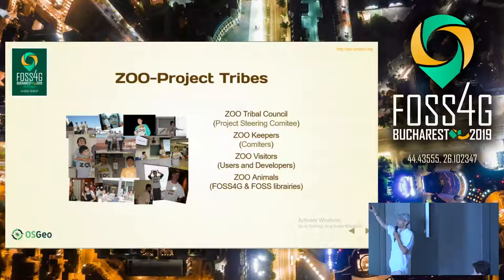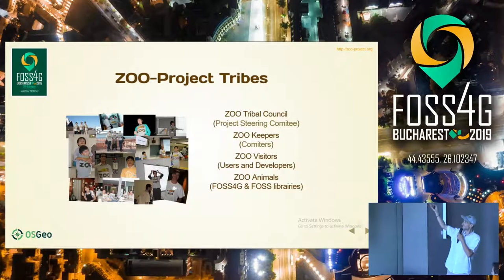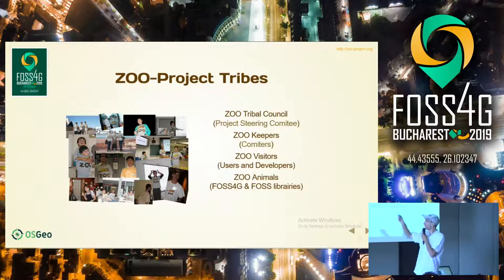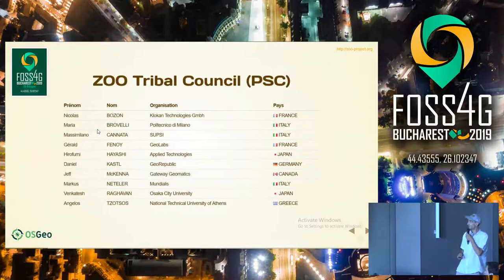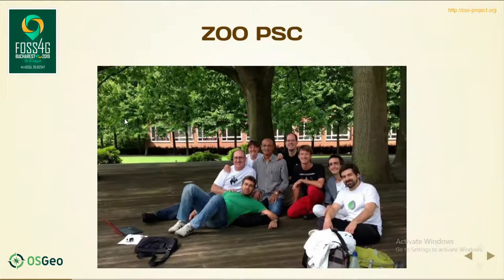You can notice that we love to give new names for everything. We call the project steering committee the tribal council and so on. On the left you can see a few people wearing a ZOO t-shirt, like my amazing children and Franco Amsterdam on the right. The tribal council includes Nicola Bonzo, Maria Brovelli whom everybody knows, Massimiliano Kanata, myself, Hiro Fumi Ayashi, Daniel Kastel, Jeff Makina, Marcus Nettler, Venkatesh Ragavan, and Angelo Tzostos, one of the OGC WPS implementers.